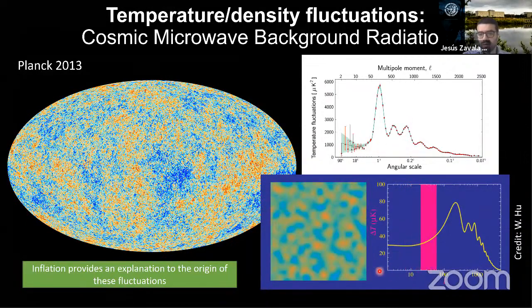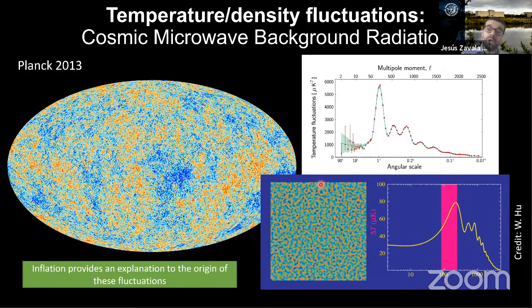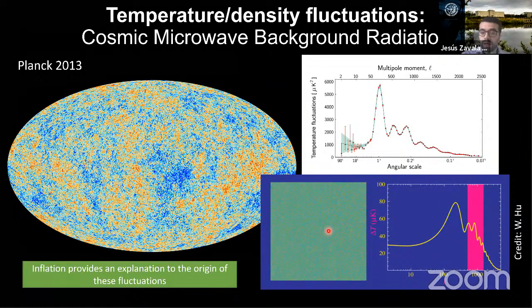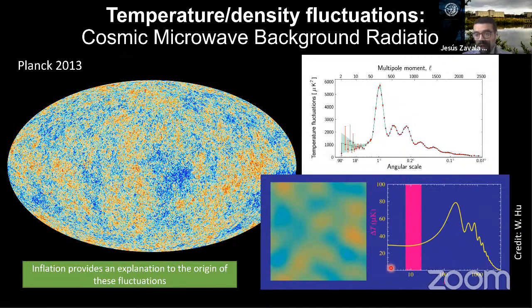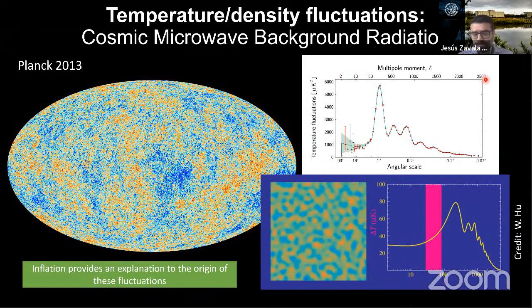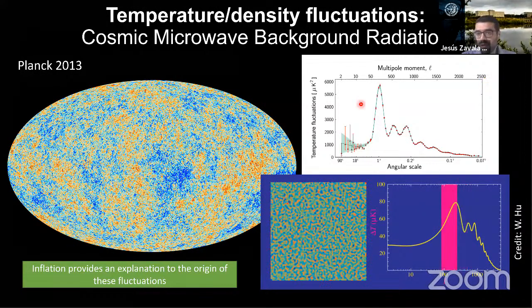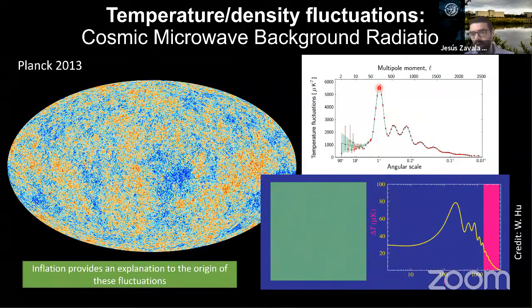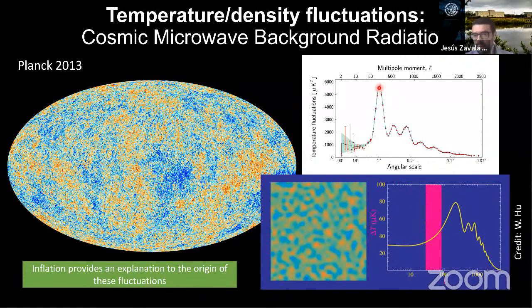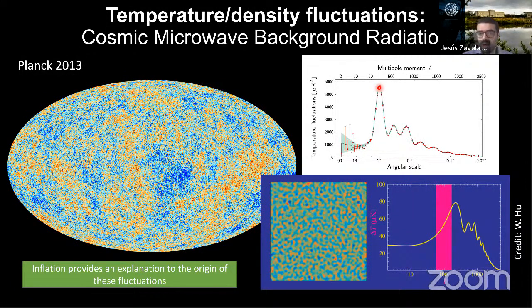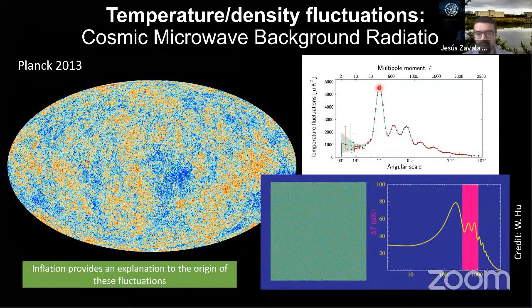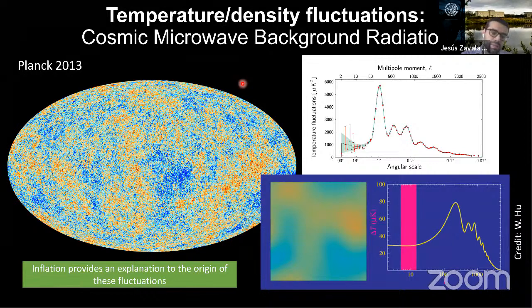This temperature angular power spectrum contains lots of physics — a lot of information we can extract and predictions we can test against models. Basically, most of early universe cosmology can be tested with the CMB. In passing, inflation provides an explanation for the origin of these fluctuations. I can describe early universe cosmology in a nutshell: you have the CMB emission roughly 400,000 years after the Big Bang, taken as the threshold between early and late universe cosmology.